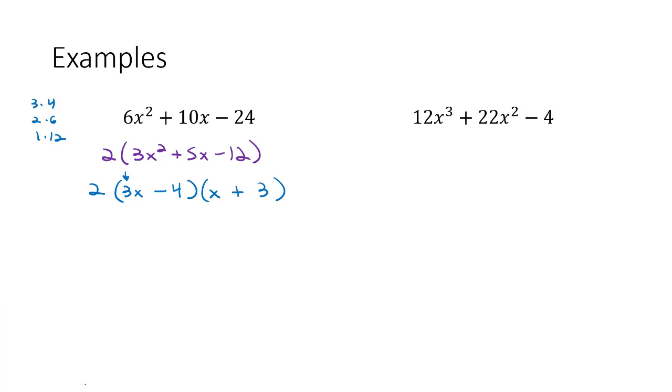Again, this is just a guess and check game. Don't be afraid to guess and try it and see if it works. On the outside, 3x times 3 is 9x. On the inside, -4x. 9 - 4x is 5x, which does match the center. So we know we've got the correct answer. 2 times (3x - 4) times (x + 3).